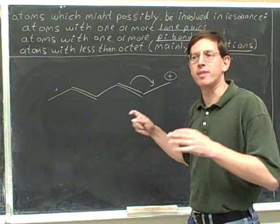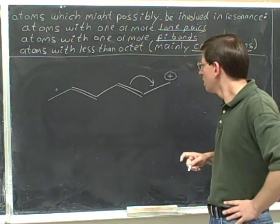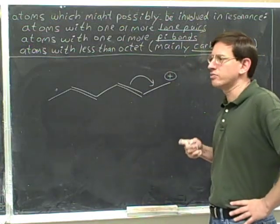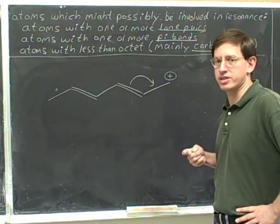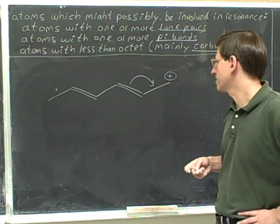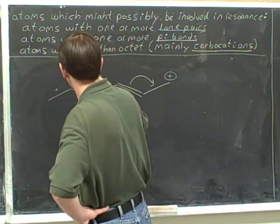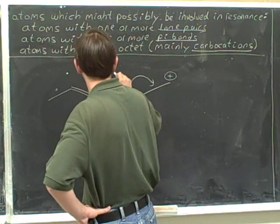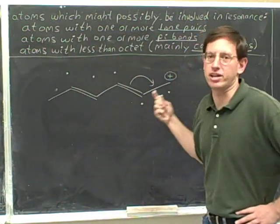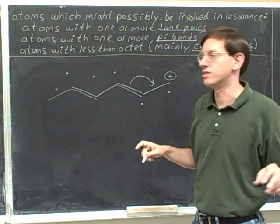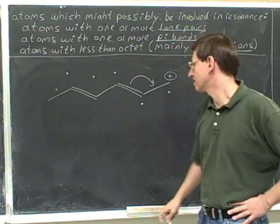As always, I hope that after every problem I pose, you're going to pause the video and think about it. A good way to start is to put dots in for the atoms that can participate in resonance. Remember, these dots do not indicate radicals. We're not talking about radicals in this series of videos — we're just using dots to indicate who can participate in resonance.